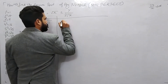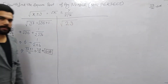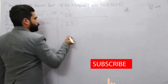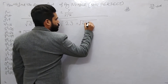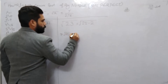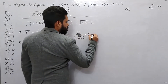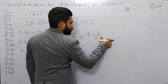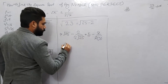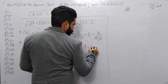Next example: √23. The closest perfect square is 25, so we write 25 minus 2. Applying the formula: root 25 minus 2 over 2 root 25. Root 25 is 5, so 2 times 5 is 10. We get 5 minus 2 over 10, which simplifies to 23 over 5, giving 4.6 — wait, 23 by 5 gives 5.09. That is the answer.